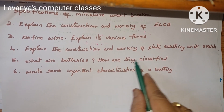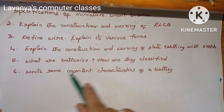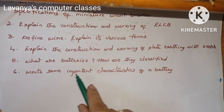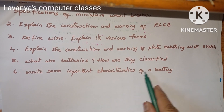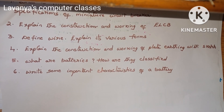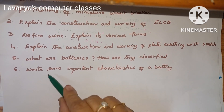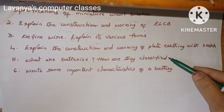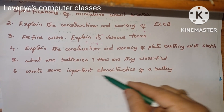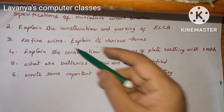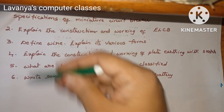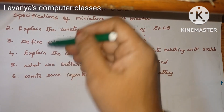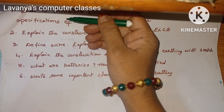What are batteries? How are they classified, with some important characteristics of a battery? Also write about battery classifications and the important characteristics of a battery. So explain all these questions.